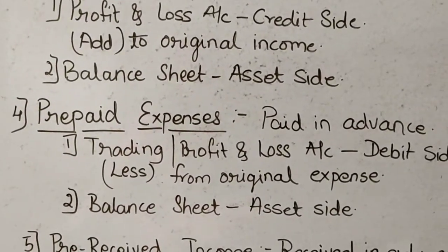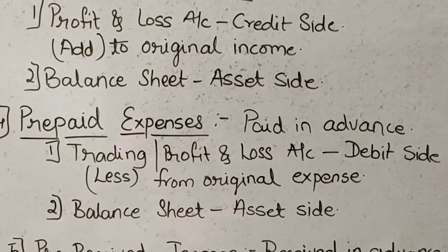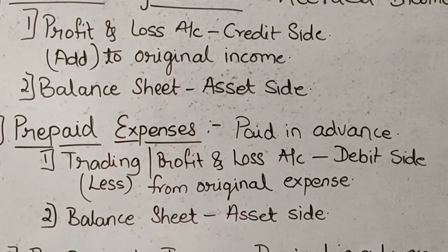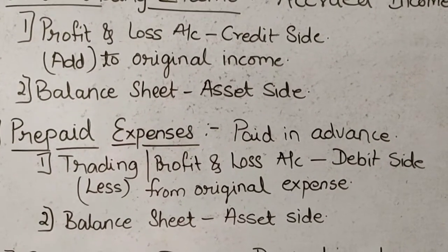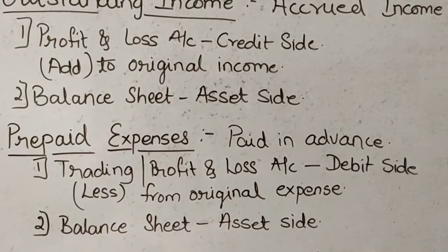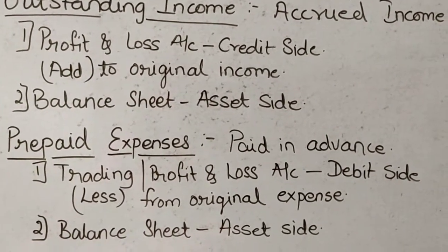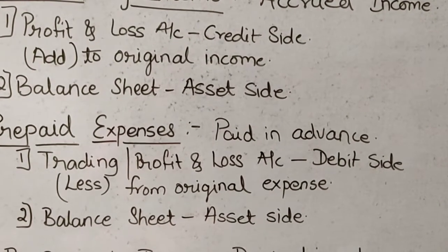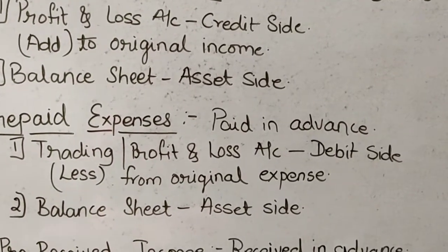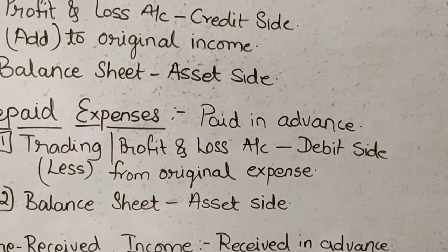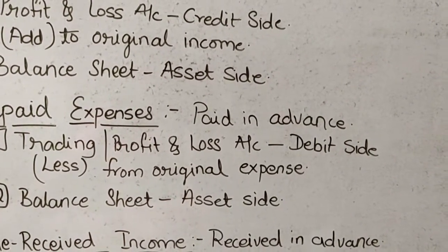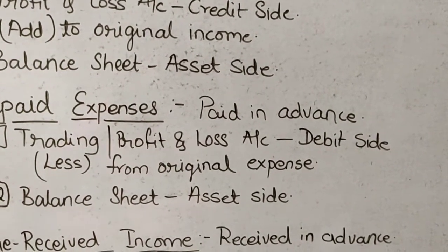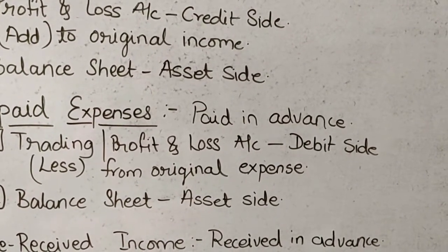The next adjustment is regarding prepaid expenses. Prepaid expenses are those expenses which are paid in advance — paid before they are due. Advertisement and insurance are examples of prepaid expenses. The effect of prepaid expenses is on the trading or profit and loss account debit side, less from the original expense. Always remember, prepaid expenses are to be deducted from the original expense. Secondly, they are recorded on the balance sheet asset side.